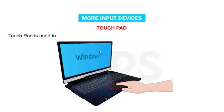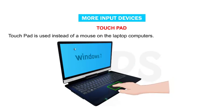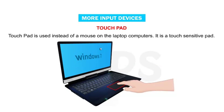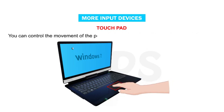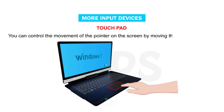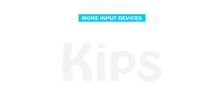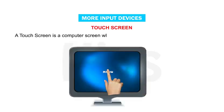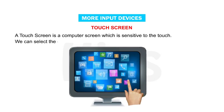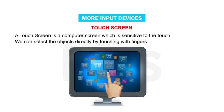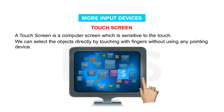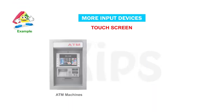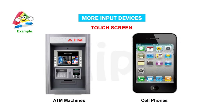A touchpad is used instead of a mouse on laptop computers. It is a touch-sensitive pad. You can control the movement of the pointer on the screen by moving your finger on the touchpad. A touch screen is a computer screen which is sensitive to the touch. We can select objects directly by touching with fingers, without using any pointing device. For example, ATM machines, cell phones, etc.